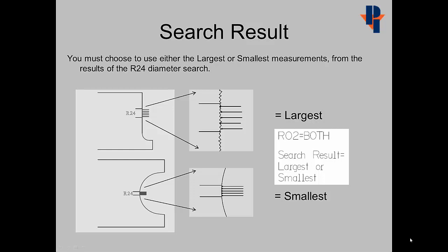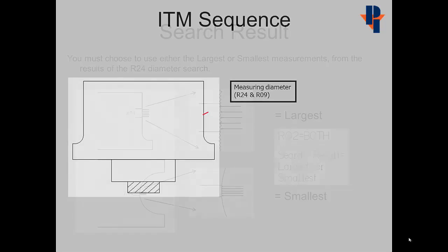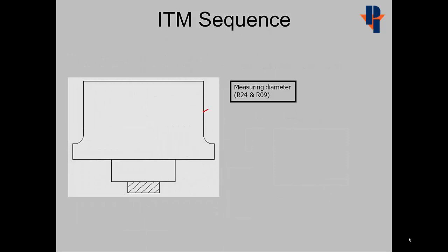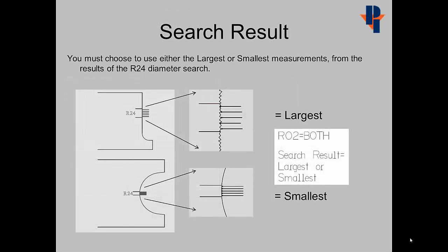We must choose to use either the largest or the smallest measurements from the results of the R24 search window. Within the search window, there are five measurements taken on every tool. Of the five measurements, do we want the largest value to represent the tool's diameter or the smallest value to represent the tool's diameter? Depending on the surface of the tool...